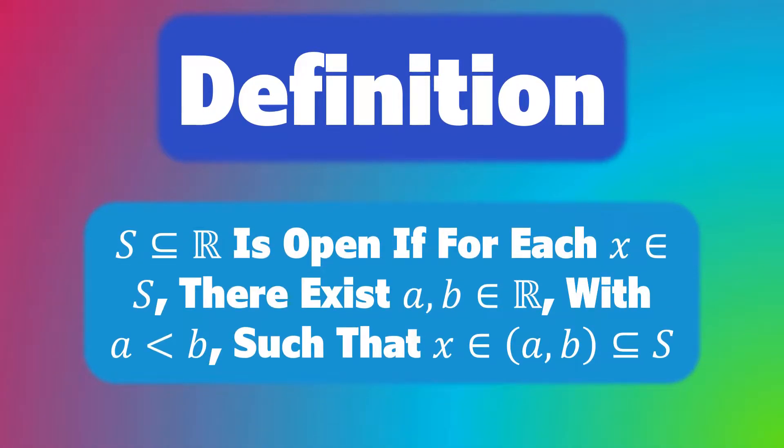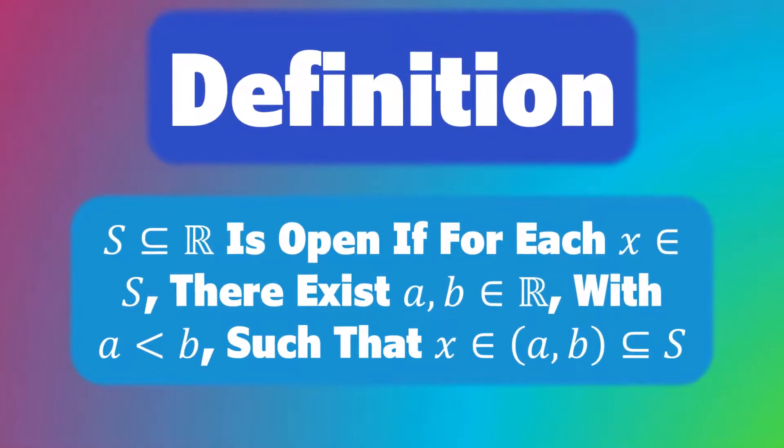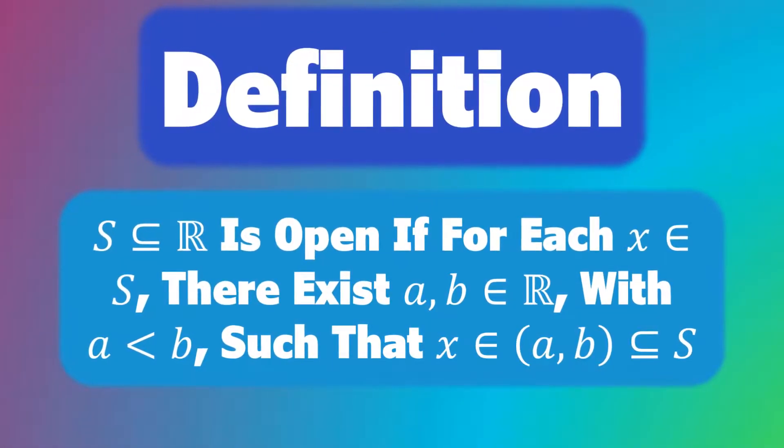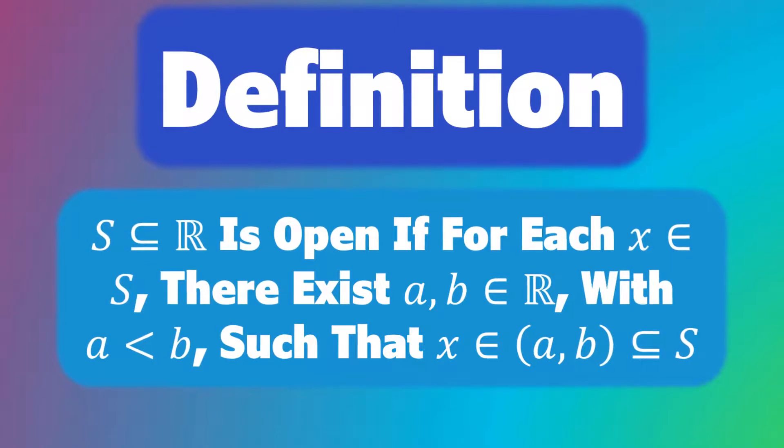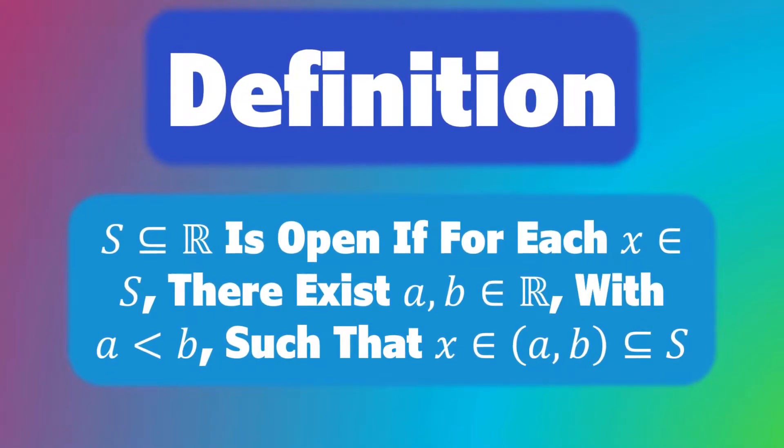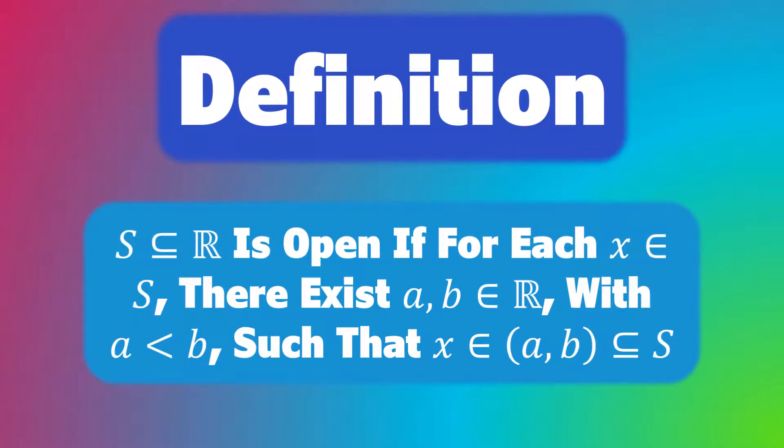A subset S of the real numbers is said to be open in the Euclidean topology if for each element x in S, there exists a and b in the real numbers with a less than b such that x is an element of the open interval (a,b) which is a subset of S.